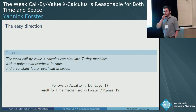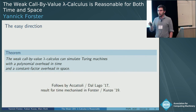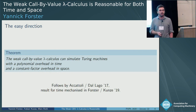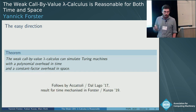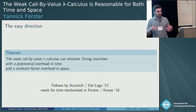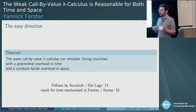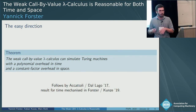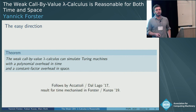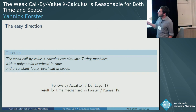One direction of the theorem is easy: it's completely straightforward that the lambda calculus can simulate Turing machines with a polynomial time and constant factor space overhead. It's already in the literature, in a paper by Accattoli and De Lago in 2017. They only do it for a different lambda calculus and for polynomial time, but looking closely the proof implies the result for weak call-by-value evaluation as well. We mechanized the time bound of the theorem in Coq at ITP 2019.